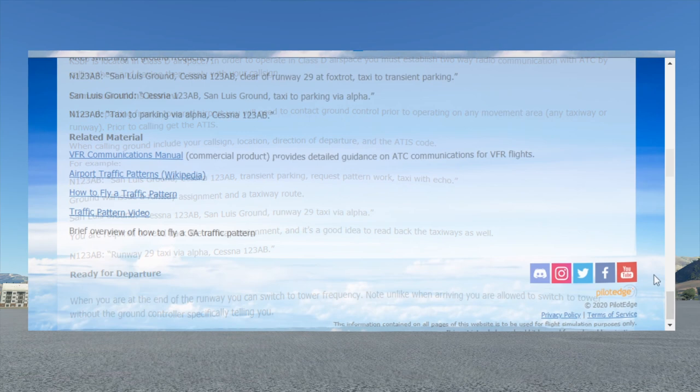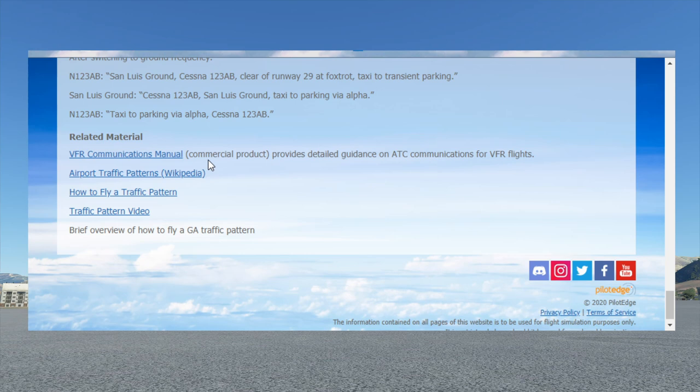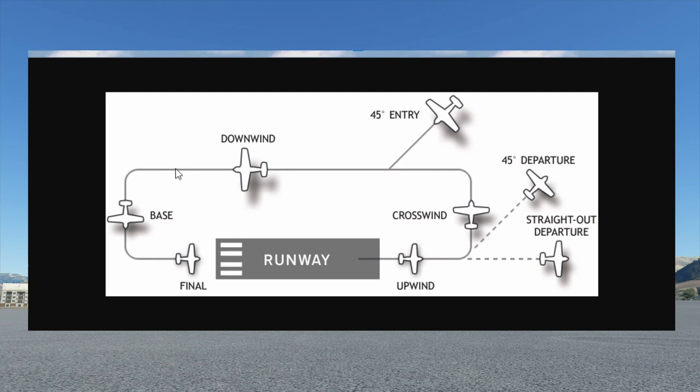At the bottom of the CAT-3 page you'll see some related material with good information on how to fly a proper traffic pattern. We're going to go through it quickly using this graphic. This is a standard left traffic pattern. Left versus right traffic patterns have nothing to do with cardinal direction — it all has to do with the direction of turns that you're making.